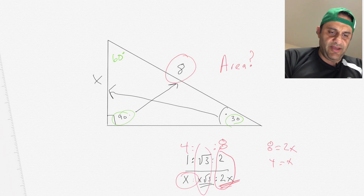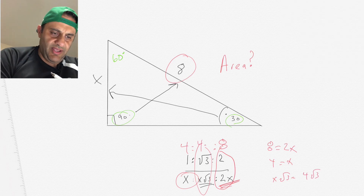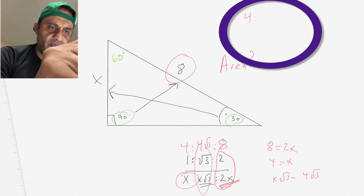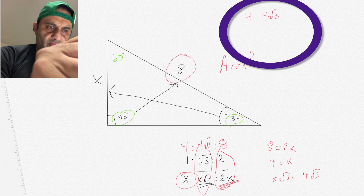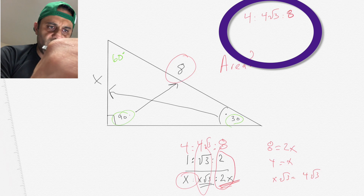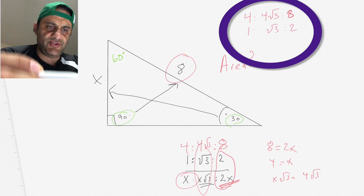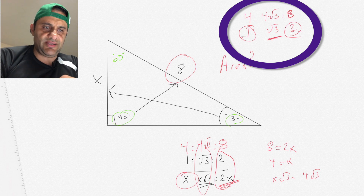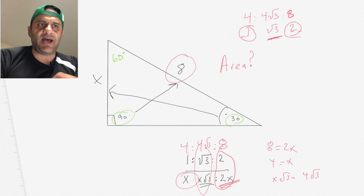The middle side is X times the square root of 3, and since X equals 4, that's 4 times the square root of 3. So the three sides are 4, 4 square root of 3, and 8. That follows the ratio of 1, square root of 3, and 2 — double the smallest side to get the hypotenuse, and the middle side is the smallest times the square root of 3.